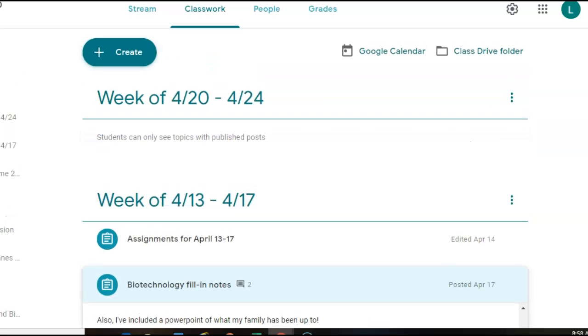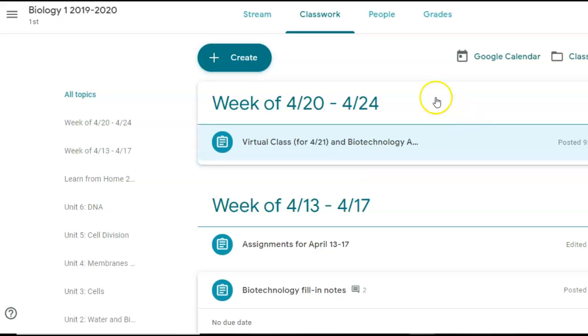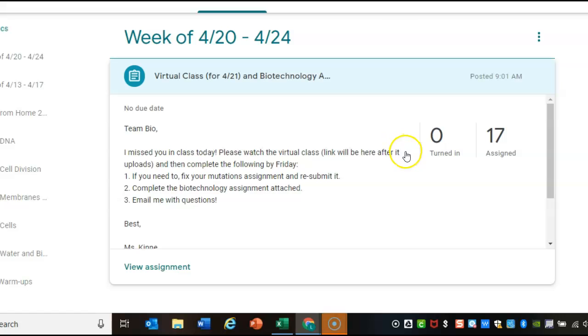So as you can see, I've organized the Google Classroom classwork by week. So right after this, you'll see week of 4/20 to 4/24. So under 4/20 to 4/24, you will see the virtual class and biotechnology assignment. So when you click on it, you'll see the virtual class link. It will be posted here after I submit it. And then you'll need to complete the following: fix your mutations assignment, complete the attached biotechnology assignment, and email me with questions.